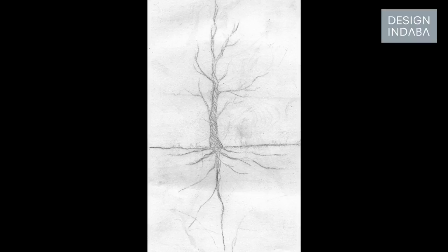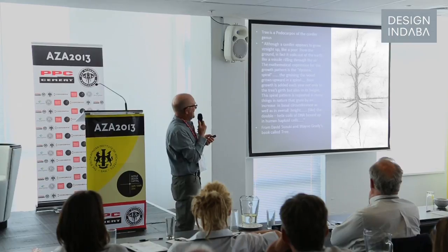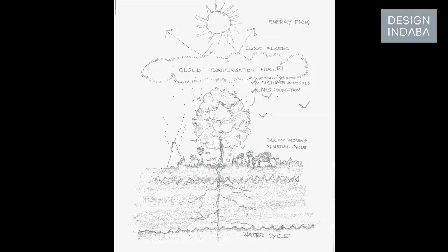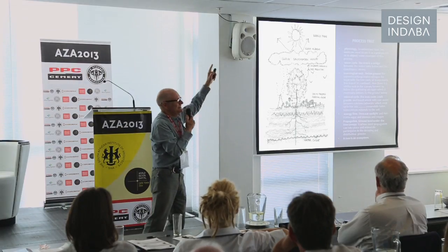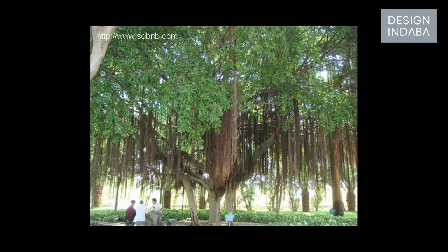I do it not only with termites, but with other processes in nature, like the behaviour of a tree. How do you make a building like a tree? A tree grows in a structural form, in a spiral form — particularly a conifer. A tree is a bridge between the water table and the sky. It has a water cycle, an energy cycle, a mineral cycle, and the whole caboodle of life. Those are the four drivers of an ecosystem.